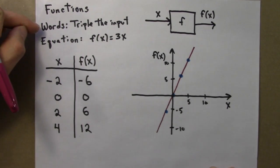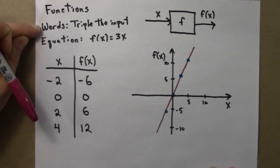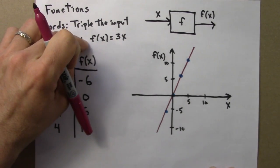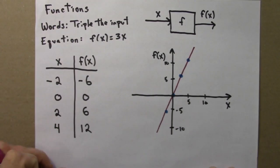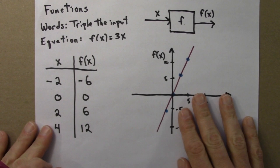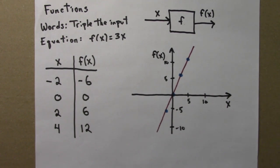It carries the same information as this word version or the equation version. I could say I want a function that triples the input. I could describe the function by saying f(x) equals 3x. Or I could describe the function just by showing you this graph. And the point is that they all contain the same information.